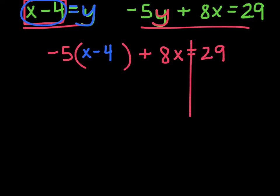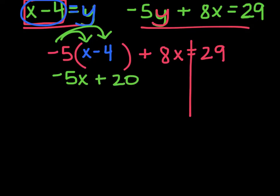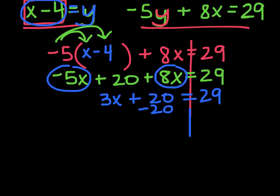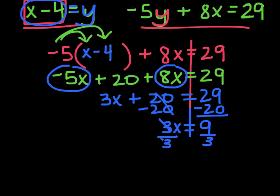I need to solve this. I distribute first: negative 5 times x is negative 5x, and negative 5 times negative 4 is positive 20, then plus 8x, equals 29. Combining like terms — negative 5x and 8x gives 3x — so I have 3x plus 20 equals 29. I subtract 20 from both sides to get 3x equals 9, then divide by 3: x equals 3.